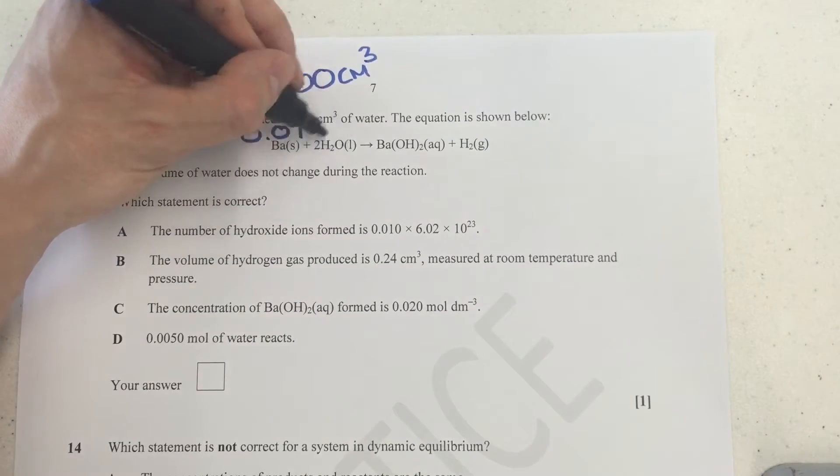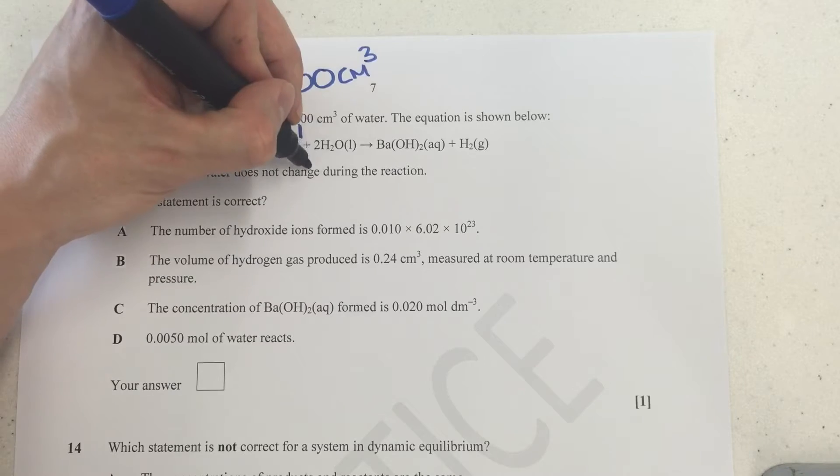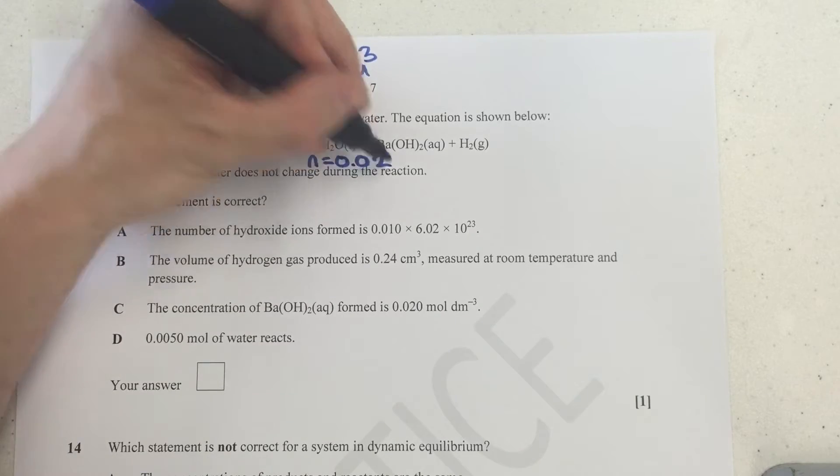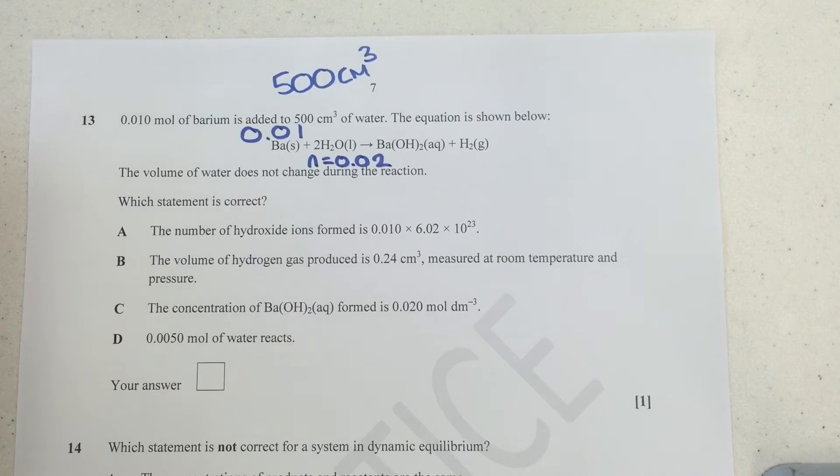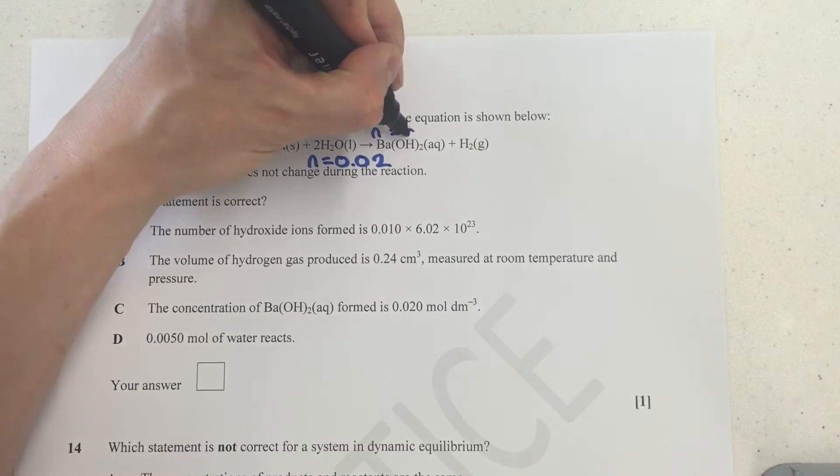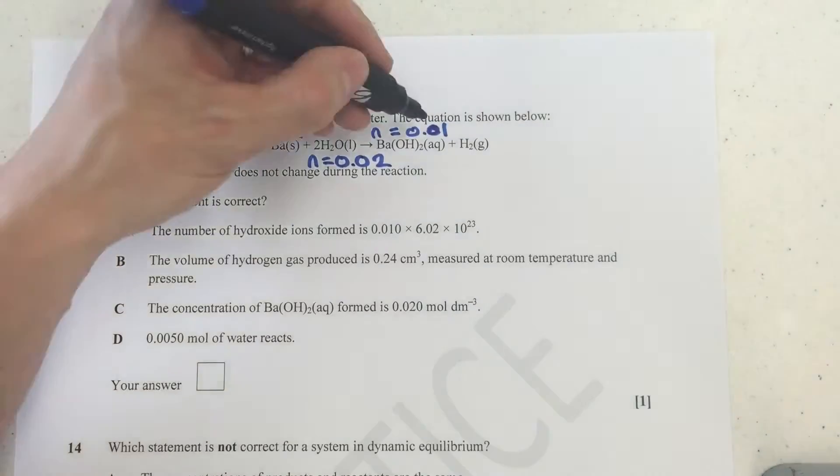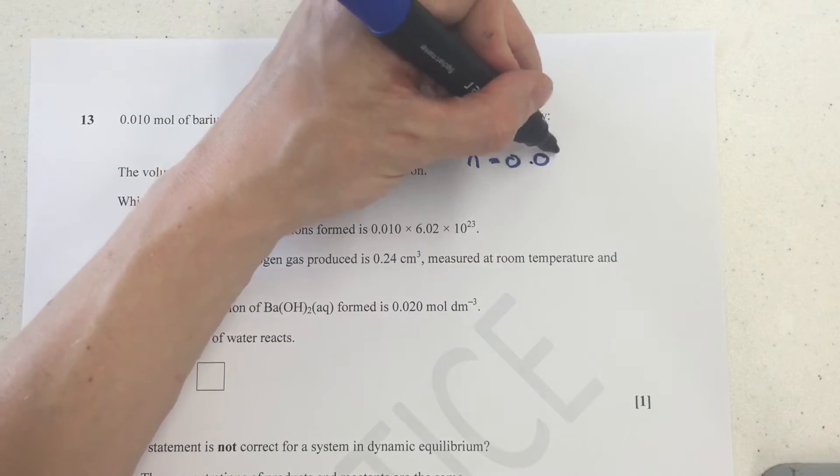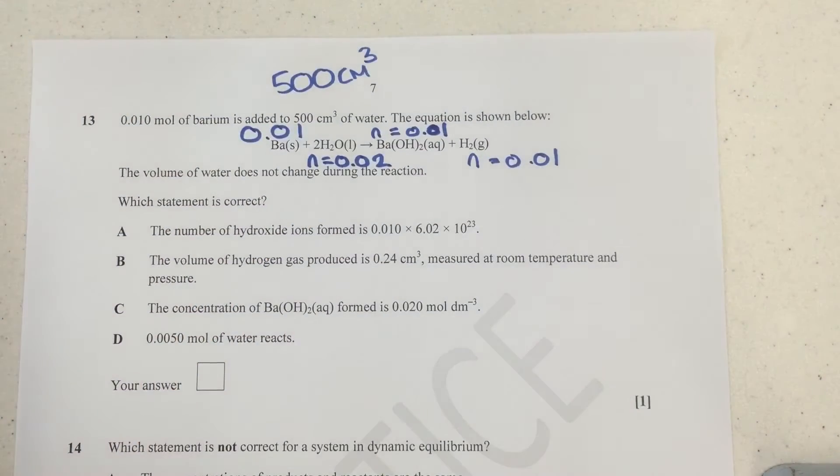So I'm going to write the moles of water that would be required, and since it's a 1 to 2 ratio, the number of moles of water is actually going to have to be 0.02. For the barium hydroxide, it's a 1 to 1 ratio, so the moles of barium hydroxide that are formed are going to be the same as the number of moles of barium that reacted, so that's 0.01. And the same is true for the hydrogen, it's in a 1 to 1 ratio, so the number of moles of hydrogen that are formed is going to be 0.01.